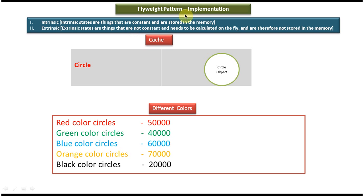In flyweight design pattern, there are two important states. The first state is Intrinsic and the second state is Extrinsic. Intrinsic states are things that are constant and stored in the memory. In this case, the circle object shape is constant — it will never change. So the shape is the Intrinsic state. Extrinsic states are things that are not constant and need to be calculated on the fly and therefore not stored in the memory.